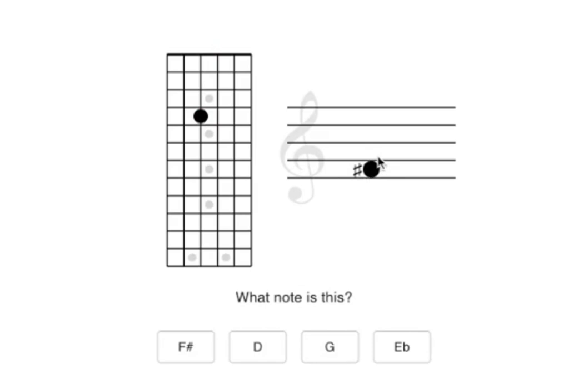You know that the staff goes F, A, C, E along the spaces on the staff. And that this note has a sharp. So even if you didn't know the fretboard, you might be able to tell that this is an F sharp note. If you do know the fretboard, you might count up from the open D string. Maybe if you don't know what that note is.